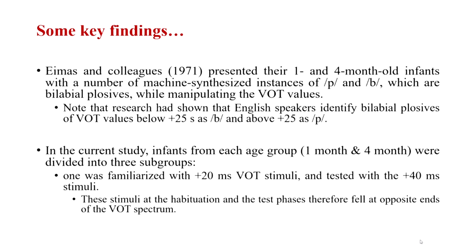One very interesting study was conducted by Eimas and colleagues in 1971, when they presented one and four month old infants with a number of machine-synthesized instances of the sounds 'ba' and 'pa', which are bilabial plosives. A bilabial plosive is a sound created by joining the upper and lower lip, constricting the flow of air and then releasing it — for example, 'ba' and 'pa' are bilabial plosives.